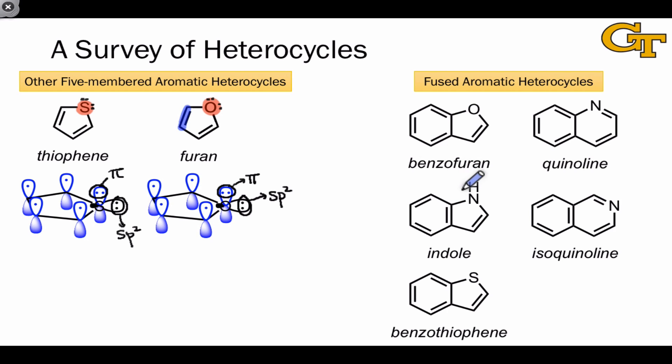Indole is analogous to benzofuran and involves pyrrole fused to a benzene ring through the same type of bond, the carbon-carbon linkage closest to the hetero atom. As in the furan case, this molecule has an isomer which involves fusing a benzene ring to this carbon-carbon bond, and that's called isoindole.